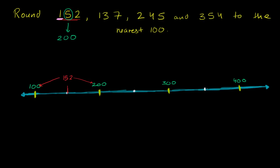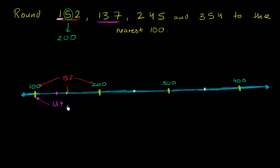Now let's think about 137. I encourage you to pause the video and try to round each of these other numbers to the nearest 100. Well, 137 is going to sit right over here on the number line. So our two options are: we can round down to 100, which is the multiple of 100 below 137, or we could round up to 200.